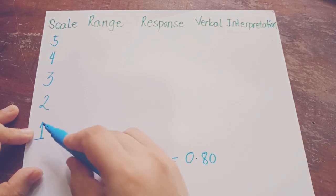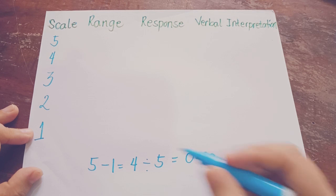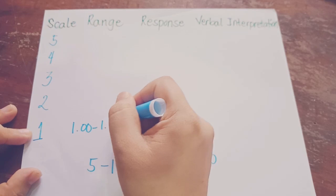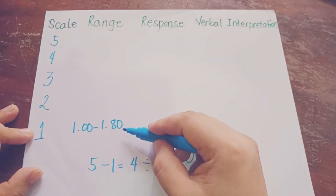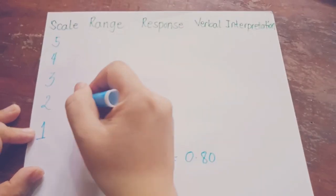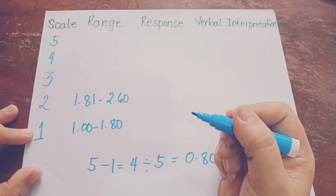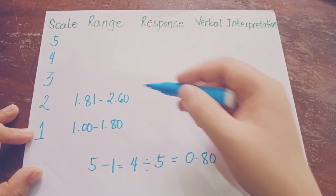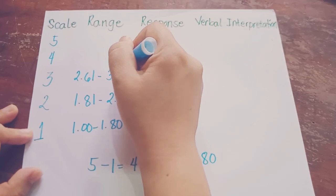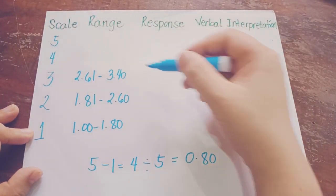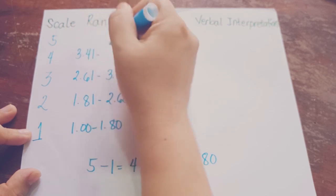Starting from the lowest point scale of 1, add 0.80. The range for the first scale is 1 to 1.80. For the second scale, add 0.80 to 1.80, giving 1.81 to 2.60. For the third scale, add 0.80 to 2.60, giving 2.61 to 3.40. For the fourth scale, add 0.80 to 3.40, giving 3.41 to 4.20.